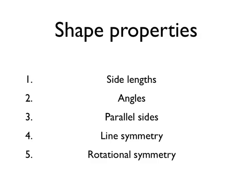The first one is the side lengths. Are any of the side lengths on the shape the same, or are the edges the same length? Are opposite sides the same length, or are the sides next to each other the same length? We can describe a lot about a shape through describing its side lengths.